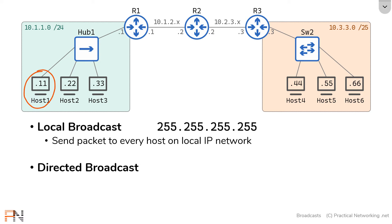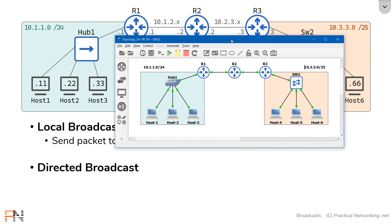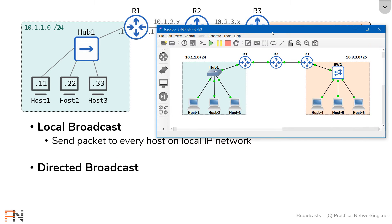For example, host 1 is on the 10.1.1.0/24 network. Host 1 can send a packet to 255.255.255.255 to deliver that packet to host 2, host 3, and the router. Notice the router has an IP address in this network, therefore the router is considered a member of the local network. This topology is actually something I've built out in GNS3, so we can use this to test the concepts we're describing.